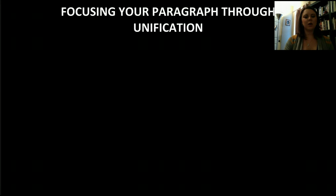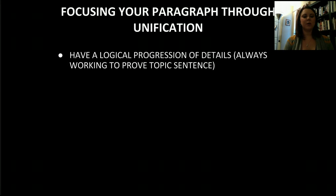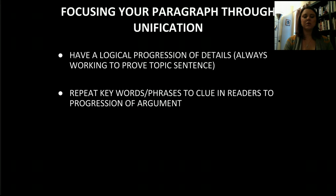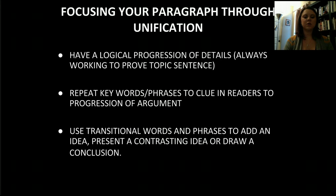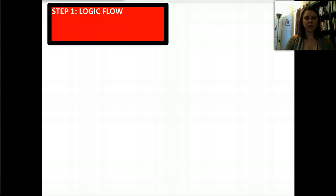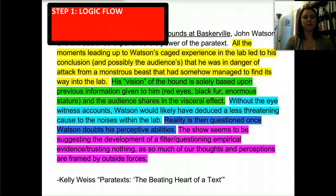Focusing your paragraph through unification — this is step two of the three things from the beginning. There are a few things you want to do to unify your paragraph. First, have a logical progression of details, always working to prove the topic sentence. Next, repeat key words or phrases to clue readers into the progression of the argument. And finally, use transitional words and phrases to add an idea, present a contrasting idea, or draw a conclusion. I've gone through the paragraph and highlighted each sentence in a different color to show this logical progression.